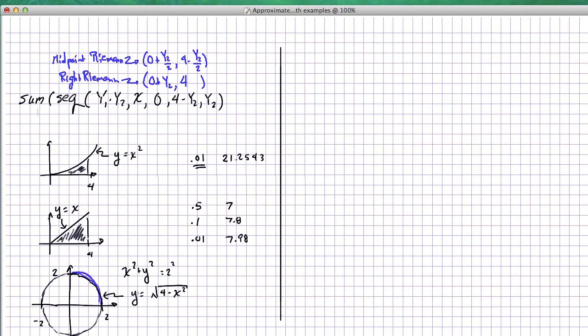So first, we're going to solve for y. We get plus or minus square root of 4 minus x squared. But because we're only interested in the top half, we're going to use the positive sign in front of the square root.